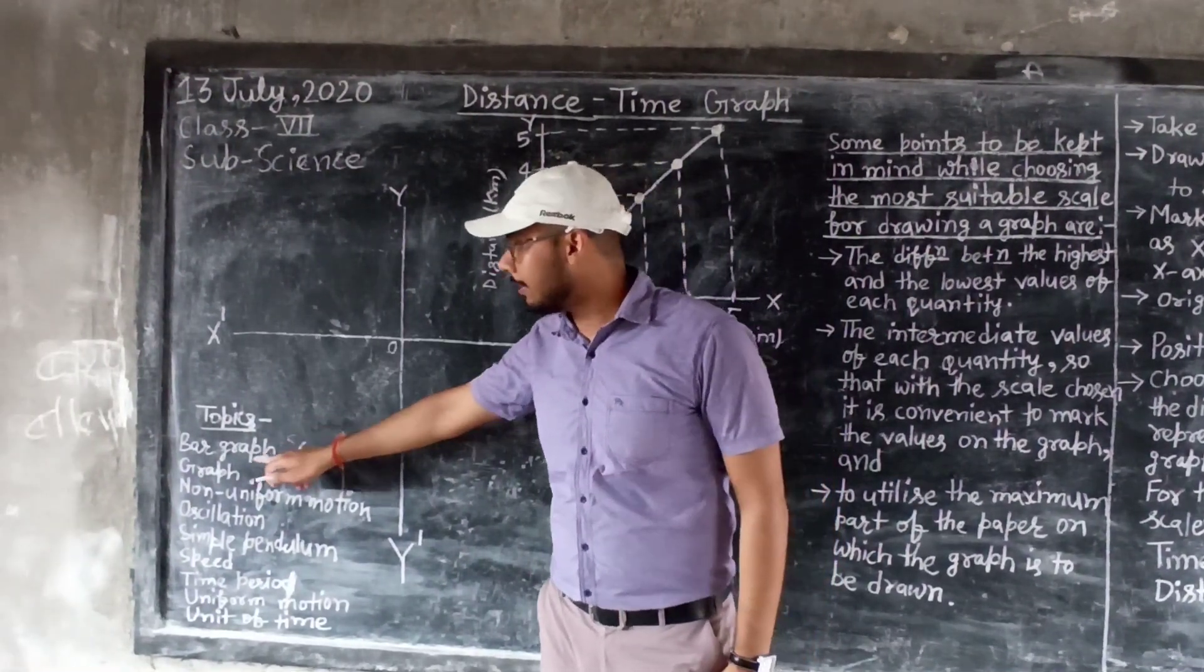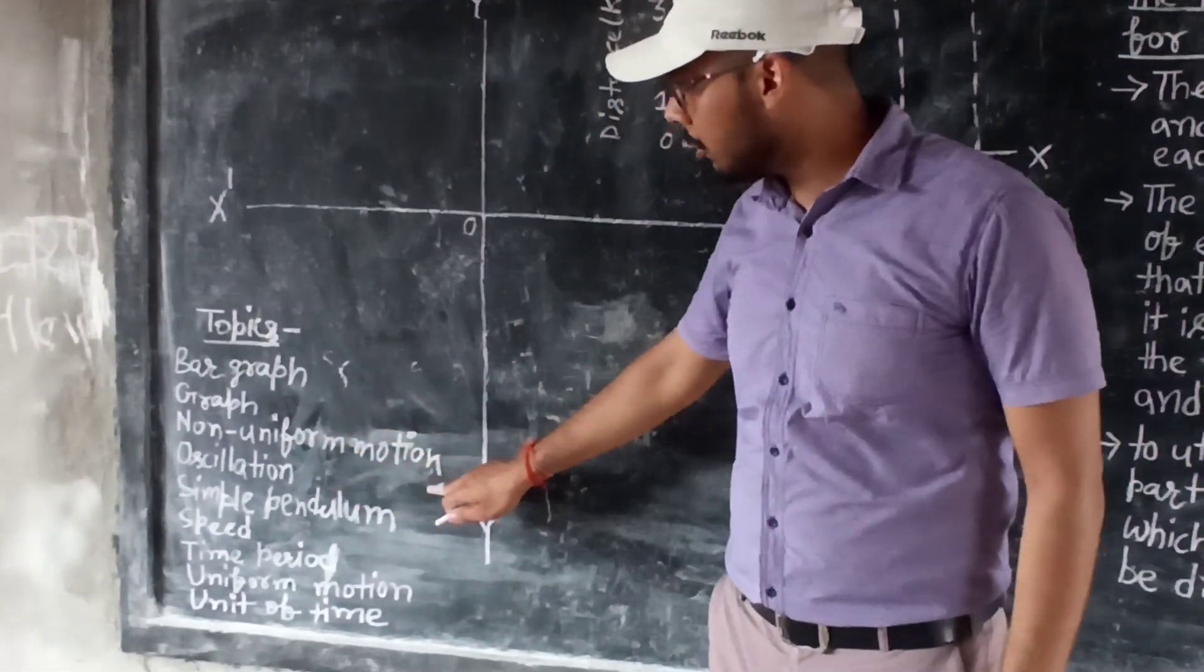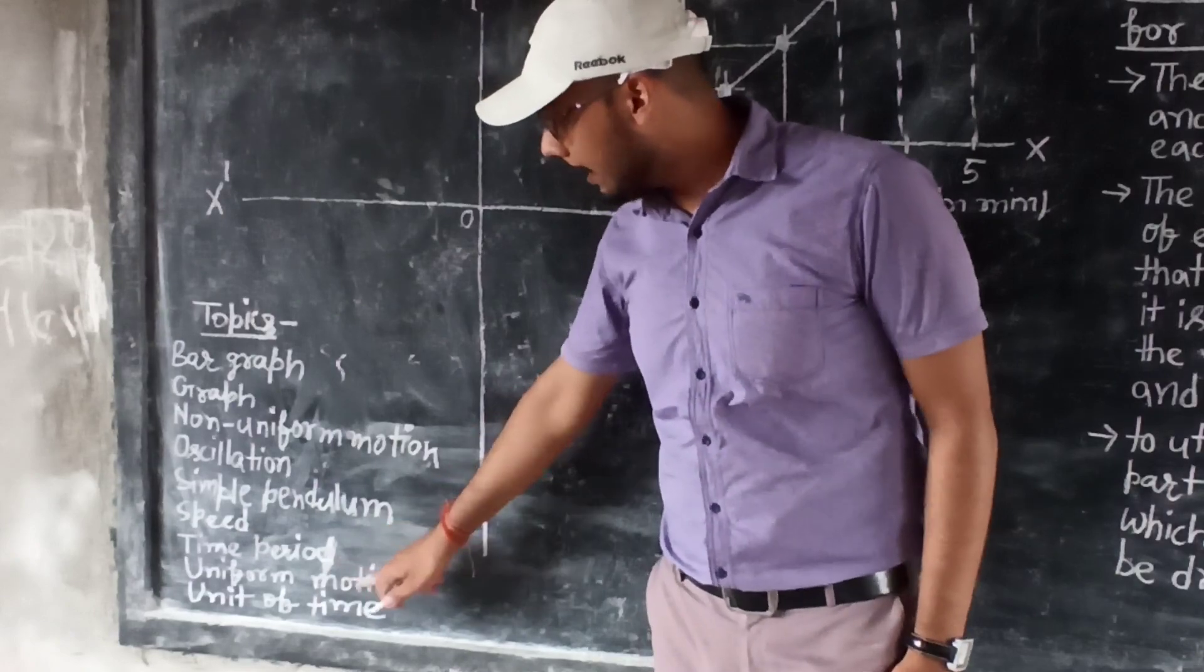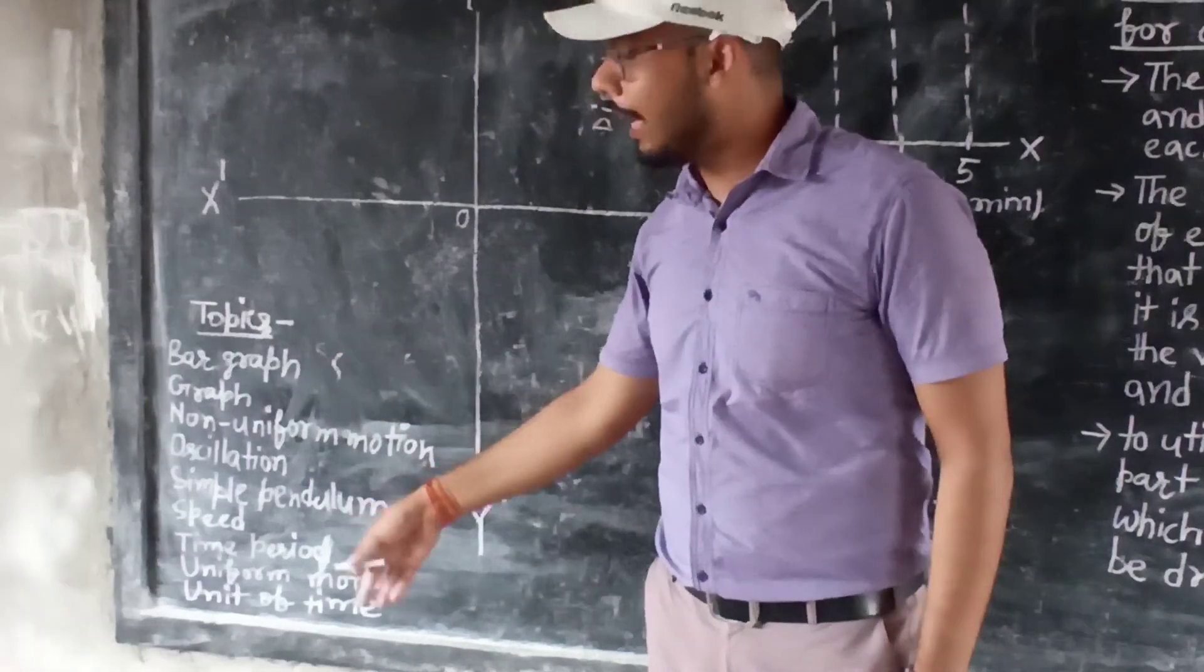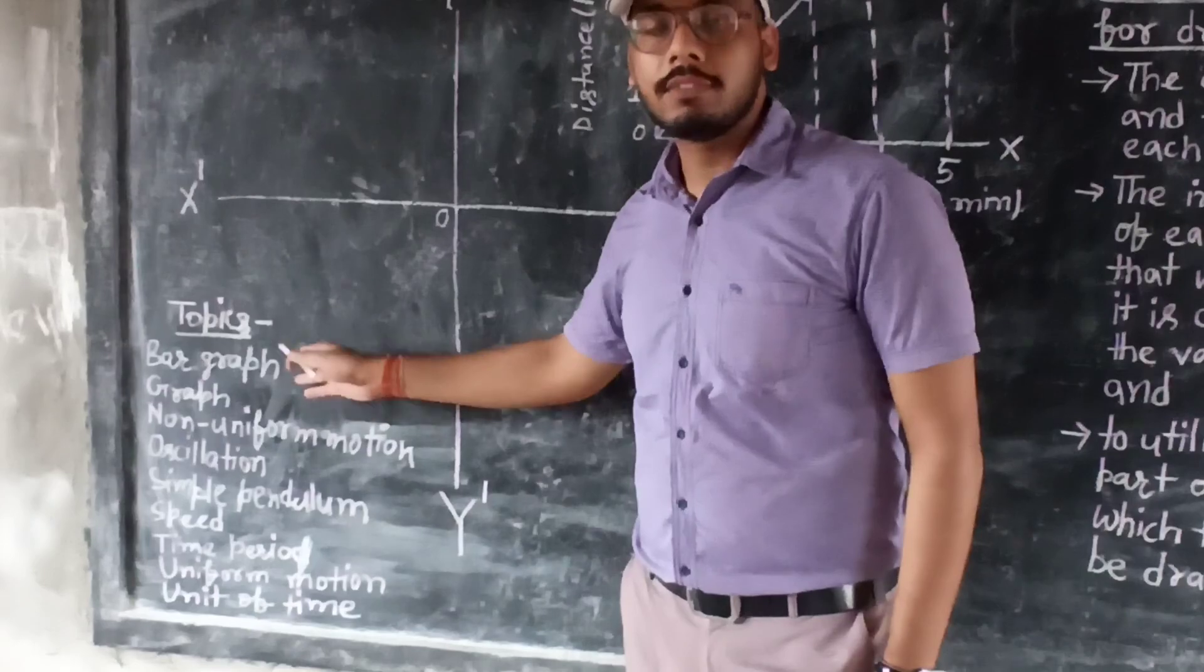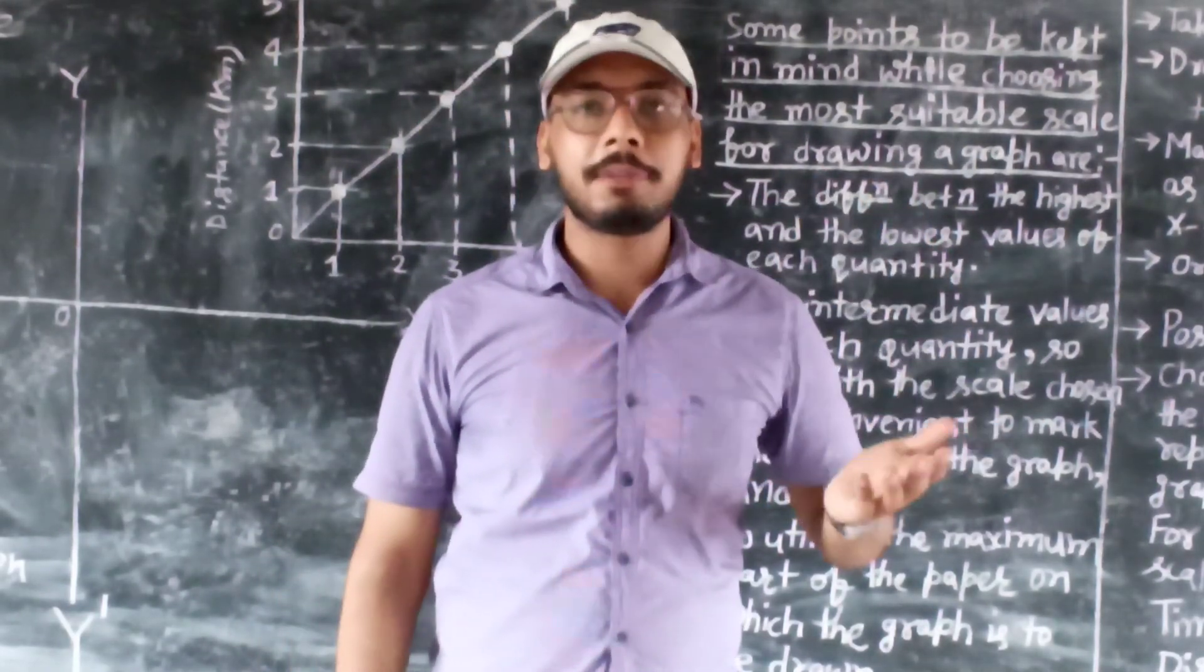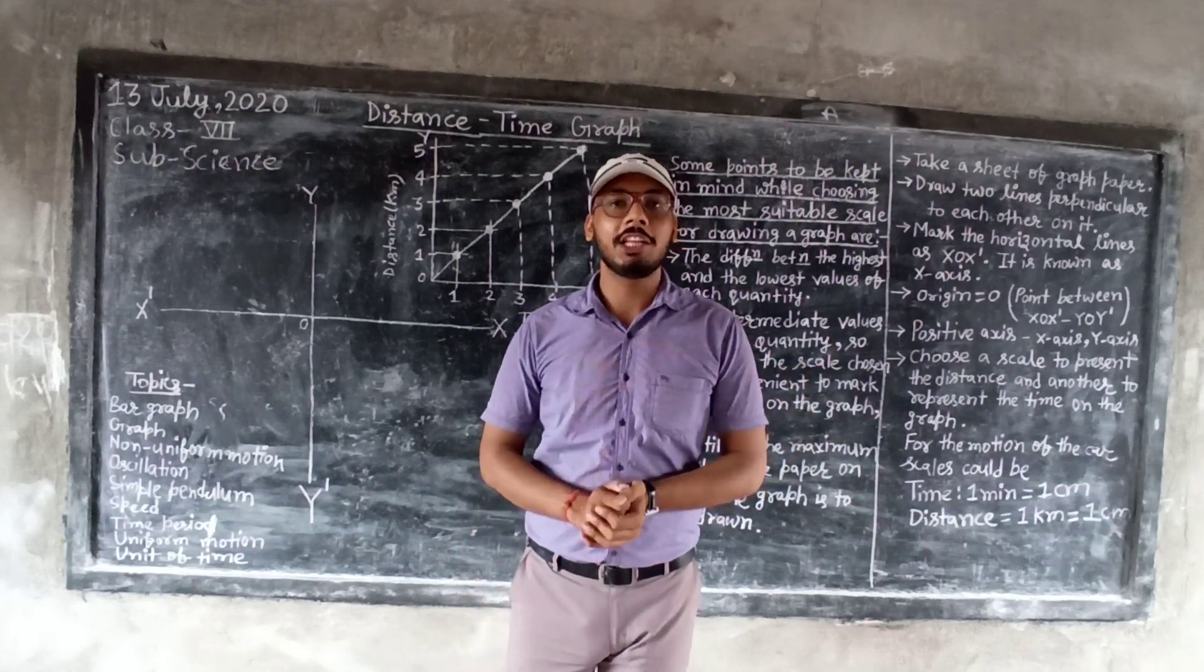So topics are there in your chapter that you have to look. That is the bar graph, second one is the graph, third one is the information, fourth is the oscillation, fifth one is the simple pendulum, sixth one is the speed, seventh one is the time period, eighth one is the information, and the last one is the unit of time. This topic we have taken in our chapter. Thanks and have a nice day. We will see the next topic of the new chapter in our next video. Thank you and have a nice day.